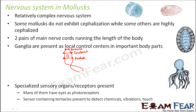Specialized sensory organs or receptors are also present. Many of them have eyes as photoreceptors, like in the case of the octopus. Sensory tentacles are present to detect chemicals, vibrations, and touch. However, these sensory organs differ in different mollusks — for example, you do not see tentacles in Unio or Pila. But most mollusks have some or other specialized sensory organs or receptors.